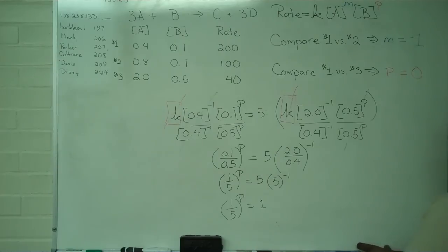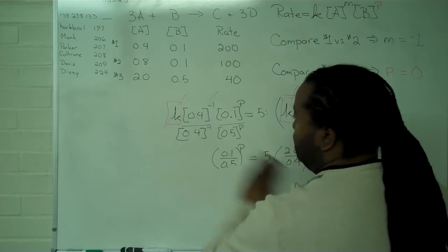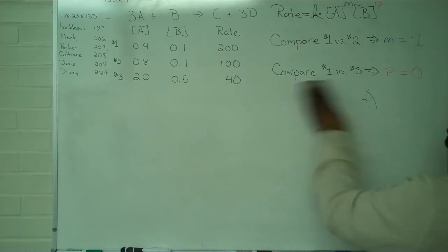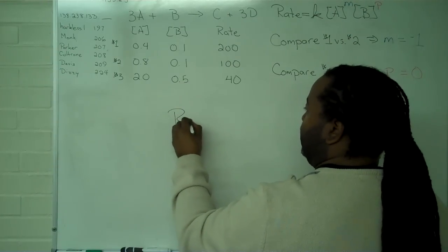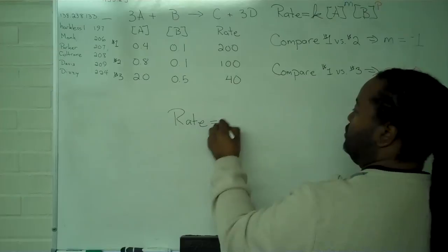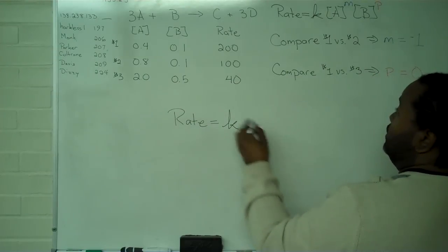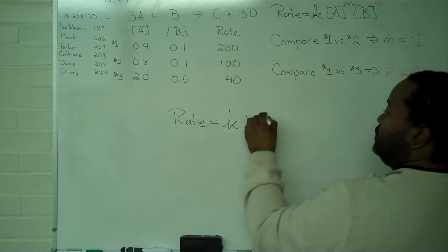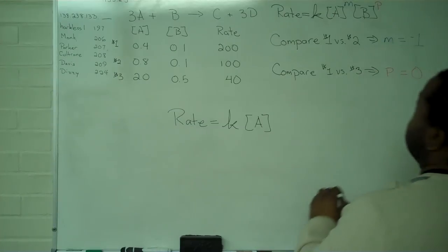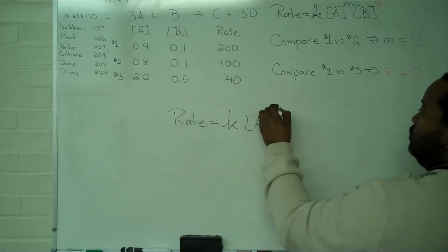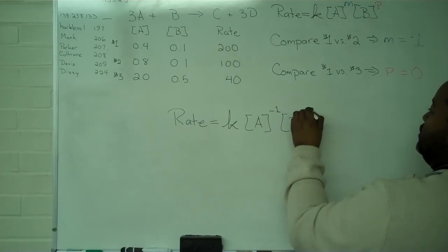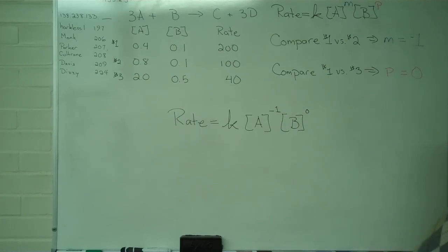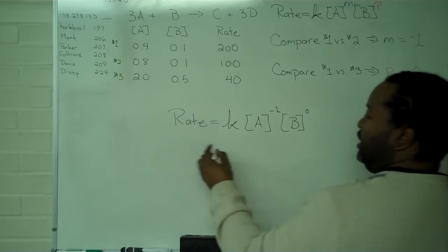I now have all of the information I need to write out the complete rate law expression. We have that the rate of reaction will be equal to the rate constant times component A raised to the negative 1 and component B raised to the 0.